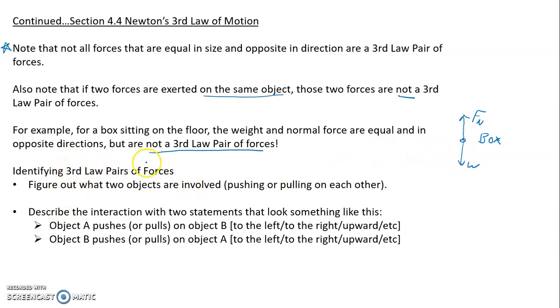So what is a third law pair of forces? Well, first of all, you need to figure out what two objects are involved. They're going to be pushing or pulling on each other, and then describe the interaction with statements like this. So object A pushes or pulls on object B, and instead of A and B, you're going to fill in object names, and then you can say to the left or to the right or upward or downward or whatever it is. But the beauty of it is, once you've written this statement, then all you have to do is just reverse them. So object A goes to there, object B you switch it to the front, and then you change the direction. So let's see how that works.